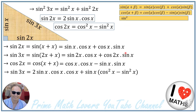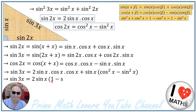We have another trigonometric identity: sine squared of x plus cosine squared of x equals 1, which means cosine squared of x equals 1 minus sine squared of x. I replace cosine squared of x with 1 minus sine squared of x throughout the expression and then simplify.